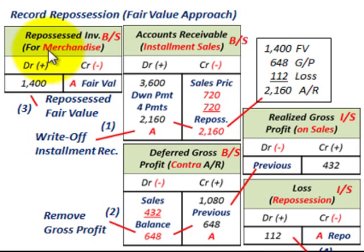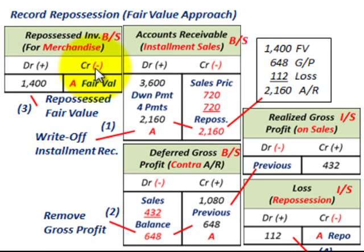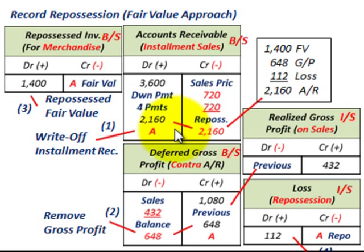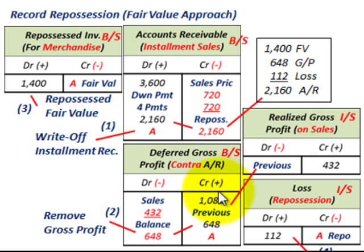We're going to have a repossessed inventory account for the merchandise that was repossessed, and we'll record that. The accounts we're dealing with are: repossessed inventory for the merchandise brought back in, installment receivables shown as accounts receivable, and a deferred gross profit account — which is a contra account to accounts receivable that reduces our installment accounts receivable. We'll also deal with the loss on repossession, and I'm showing realized gross profit to demonstrate how it was moved off the deferred gross profit account prior to repossession.